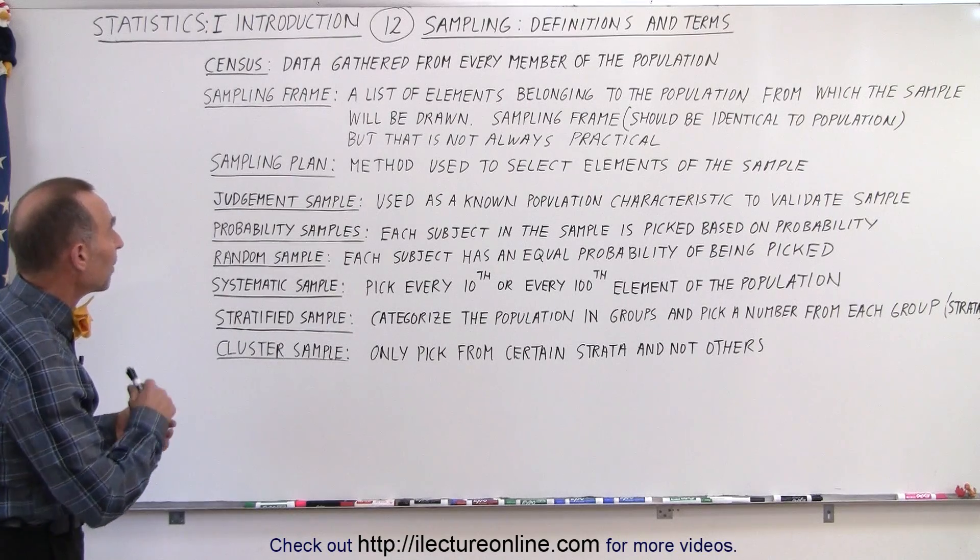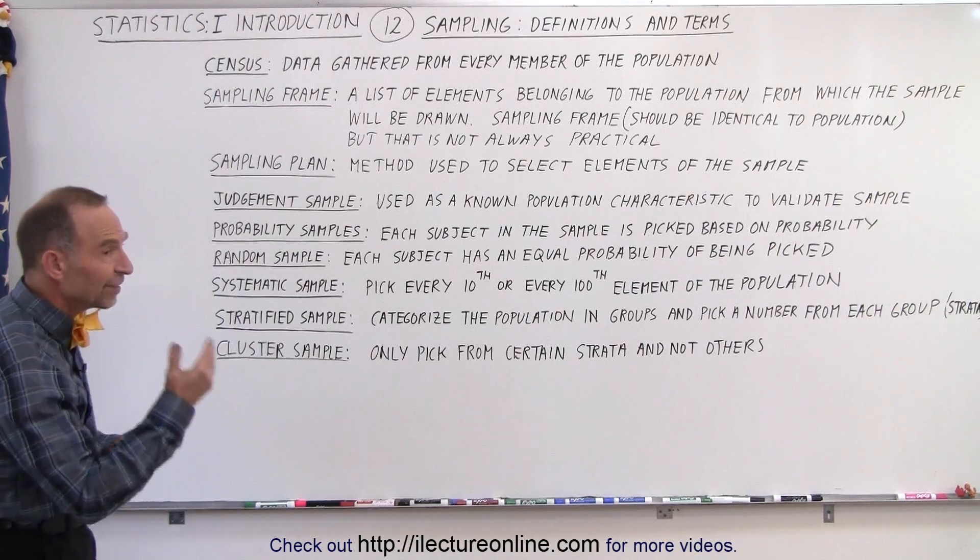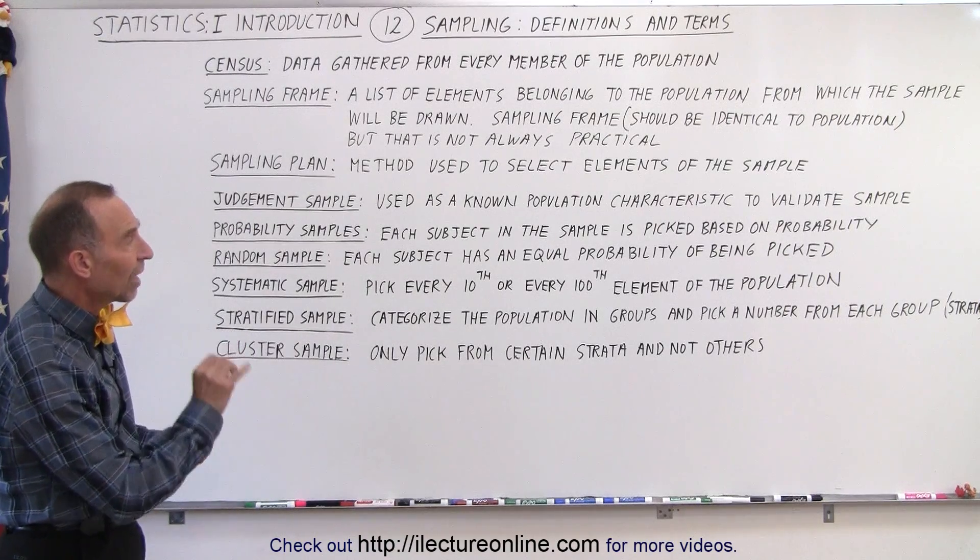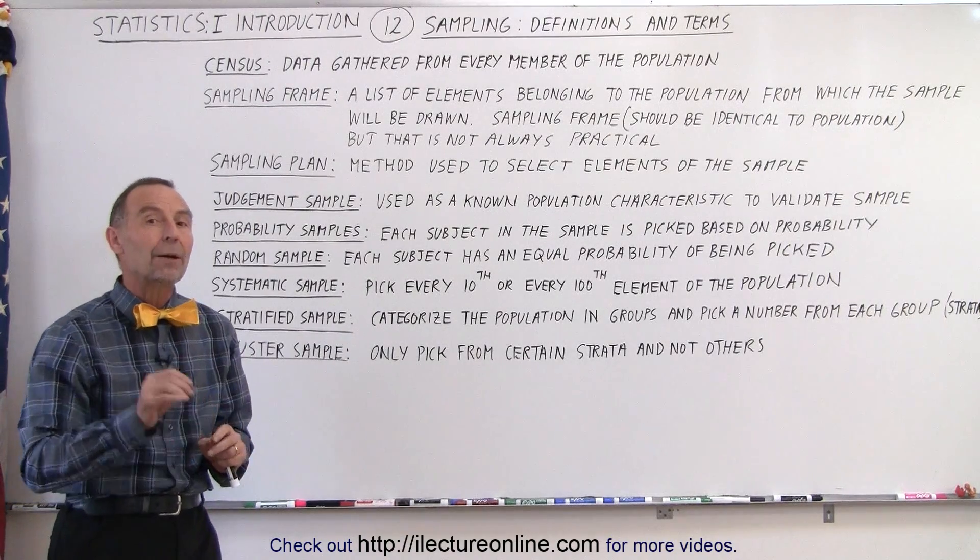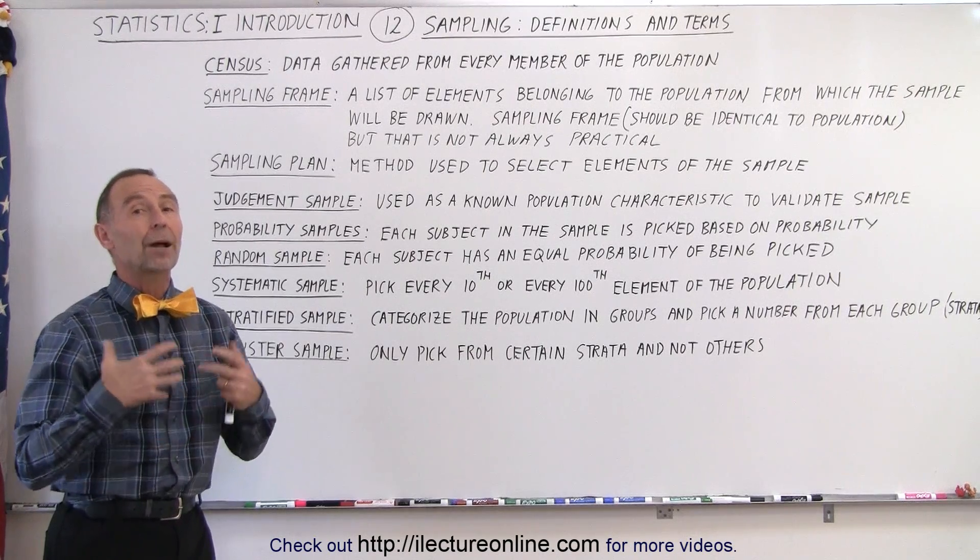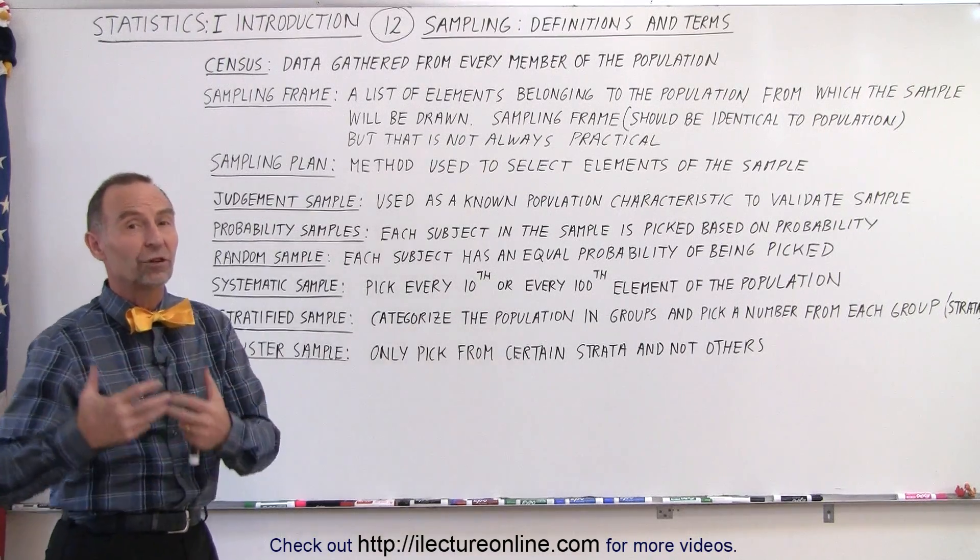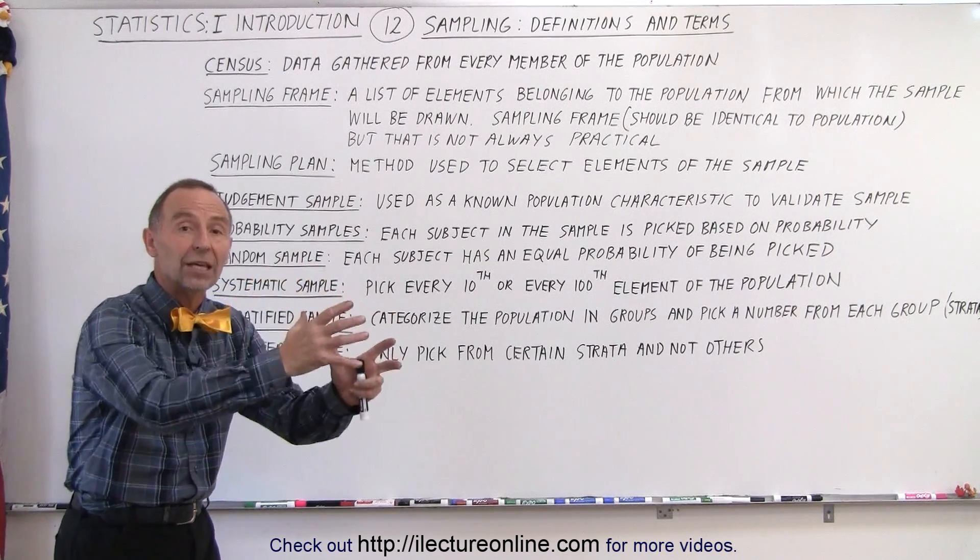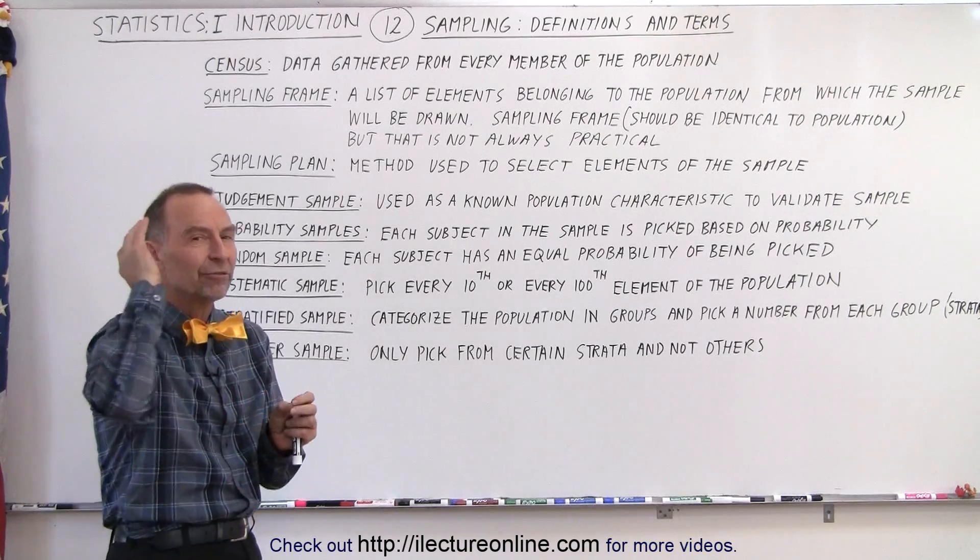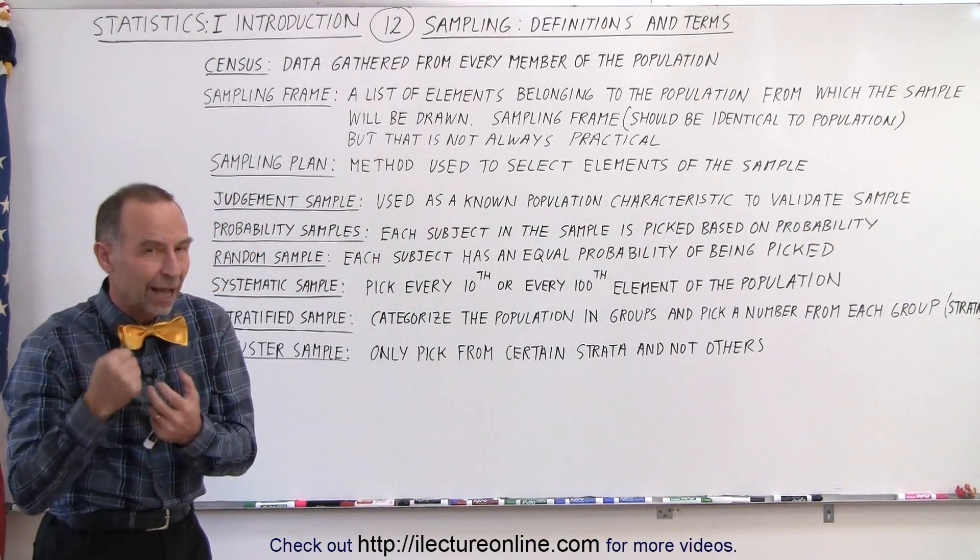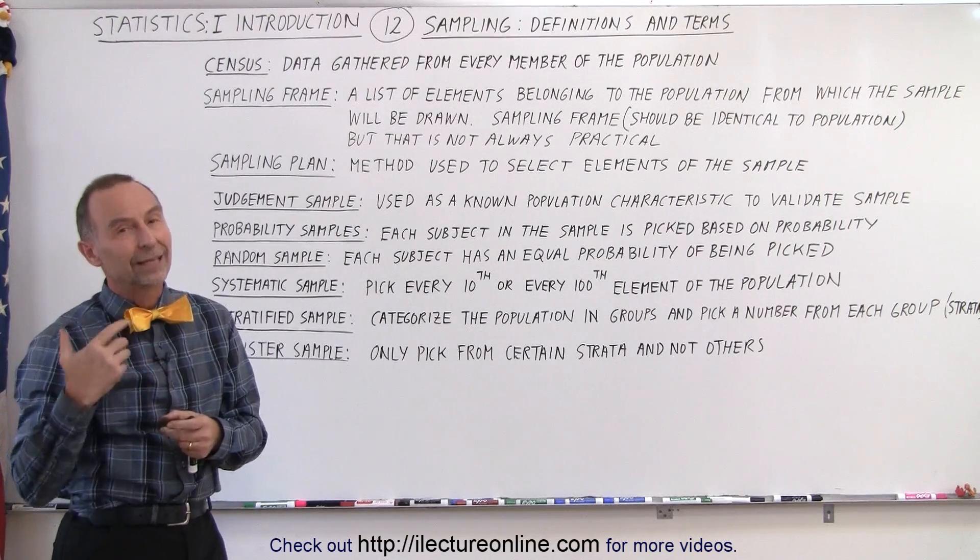Next, we look at the probability sample. So there's different kinds of samples. What is a probability sample? That is that each subject in the sample is picked based on the probability. In other words, if you want to have a high probability that the people you question are farmers, you do not want to take a sample from the inner city. You want to take a sample of a small town far out in the country, the probability then that you'll get a farmer on the line when you call people up is much higher.